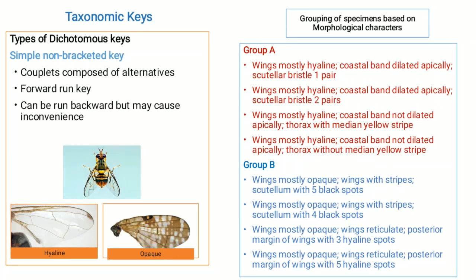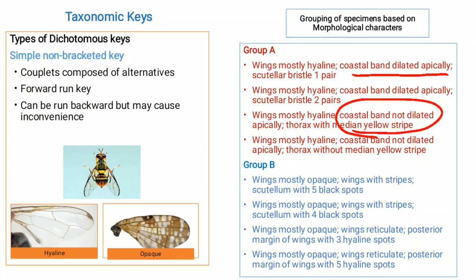The key can also be run backward, but it may cause inconvenience. Group A specimens have wings that are mostly hyaline, and Group B specimens have wings that are mostly opaque. Further subdivision in Group A is on the basis of coastal band — coastal band apically dilated or not apically dilated. Specimens with coastal band apically dilated are further subdivided on the basis of scutellum with one pair or two pairs of bristles. Specimens with coastal band not dilated apically are further subdivided on the basis of thorax — thorax with or without a median yellow stripe.